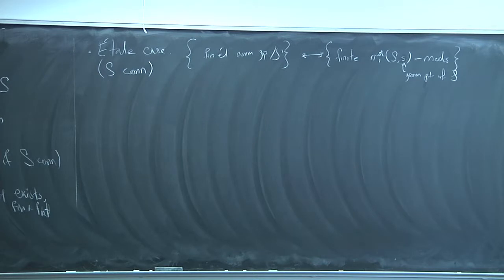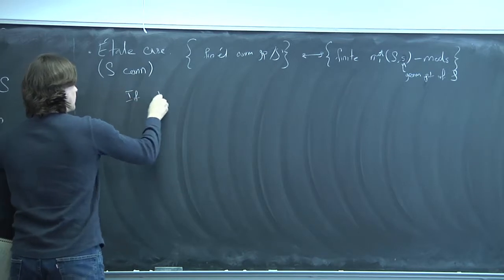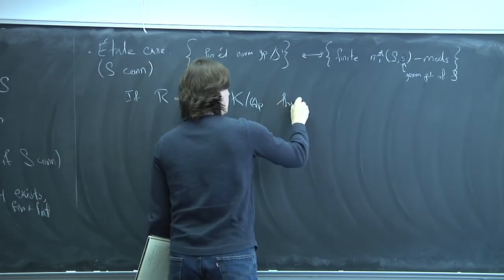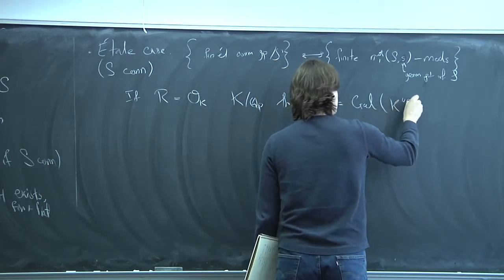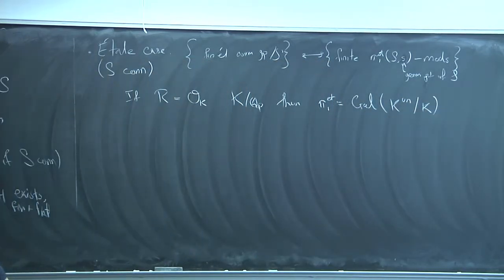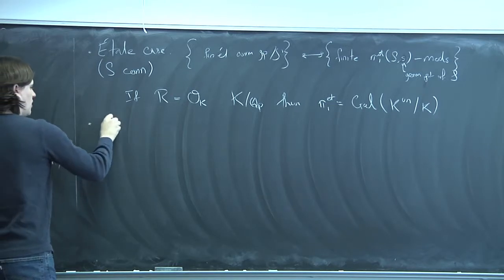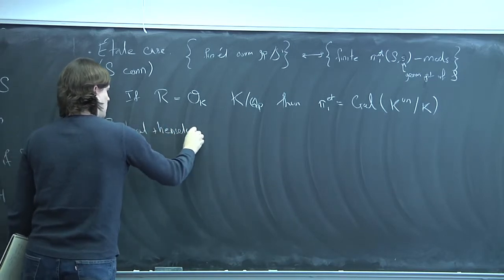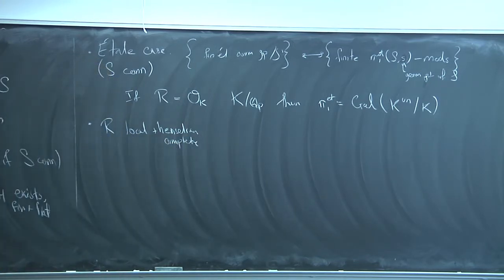If we assume that R is local and Henselian — or local and complete if you want — then you get a connected-étale sequence. The π₁ of the completed residue field is in there, and you get the connected-étale sequence as before.